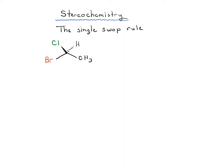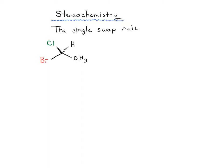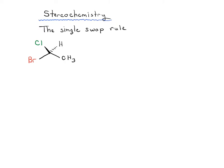In this video, we're going to talk about a neat little trick you can do for determining R and S configurations, and this is going to be helpful when we learn how to draw the enantiomers of different stereocenters. It's called the single swap rule, and it comes in really handy.